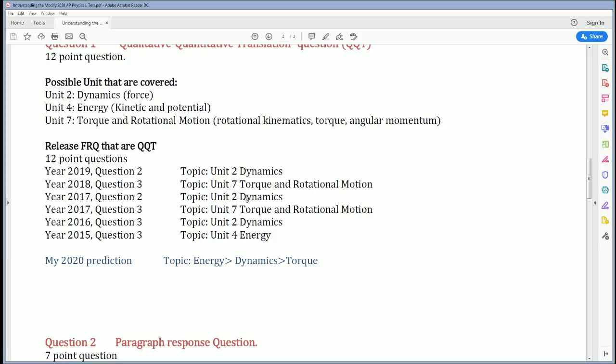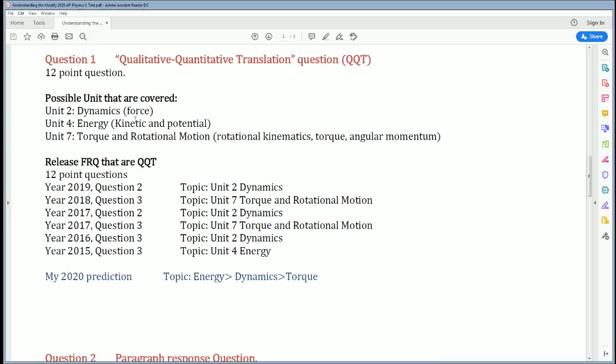Following this pattern, I don't think they're going to bring up dynamics again this year as the QQT question. Energy has not been asked for a while, so I think with strong evidence that the QQT question is actually going to be on energy. That's my first pick. Second pick would be dynamics, then torque. There is a chance that energy and dynamics are combined in one question. If you would like to study and prepare your notes for the test, go through each one of these questions and see how they were graded. If you can master this, you're guaranteed a 4 if you get all the points.